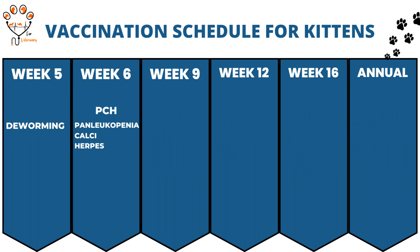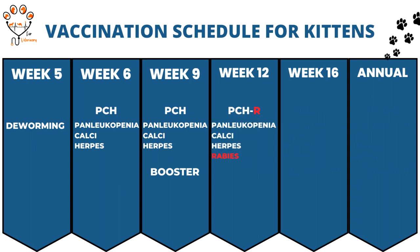On week six, you have to give the first dose of PCH — that is panleukopenia, calicivirus, and herpes virus. On week nine, you have to repeat it. On week twelve, you have to add rabies virus — PCH plus rabies. On week sixteen, you have to again inject PCH plus rabies.